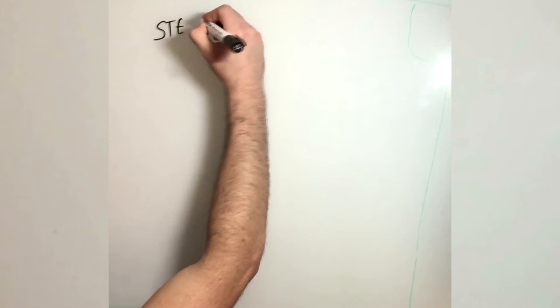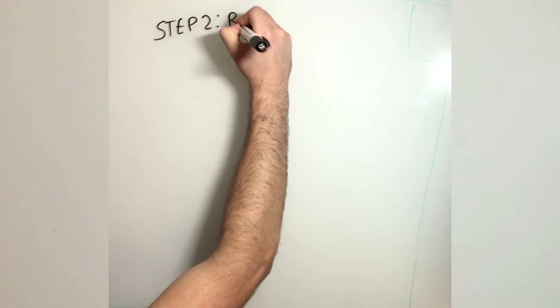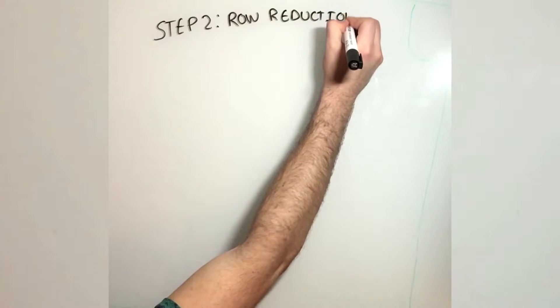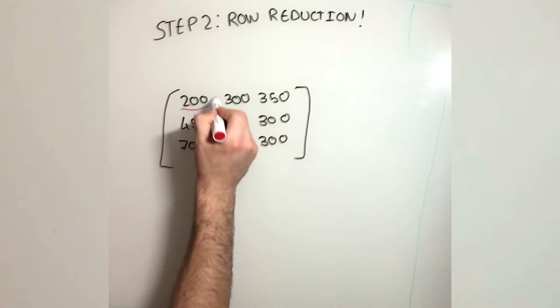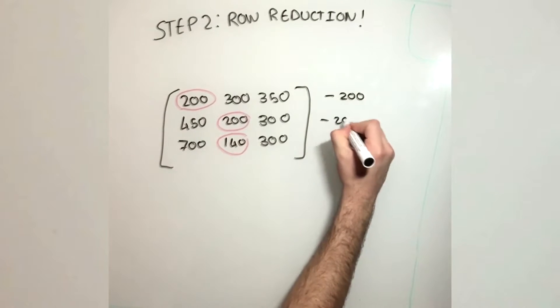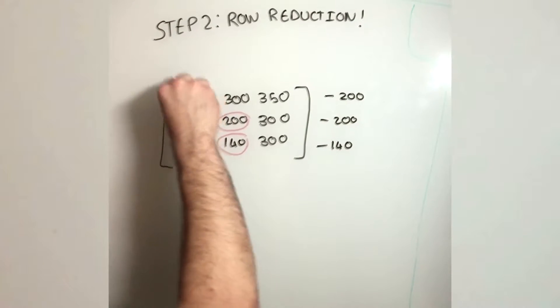After performing the first step, we want to perform the second step, which is row reduction. In row reduction, you want to circle the smallest value in each row and then subtract each row by each value.